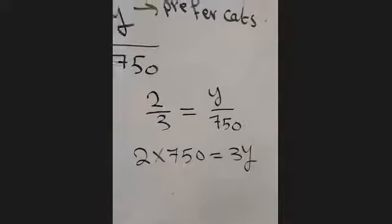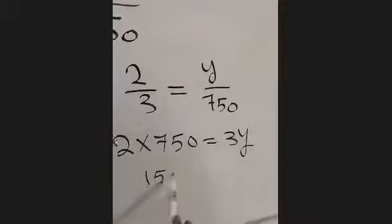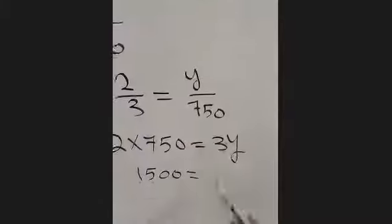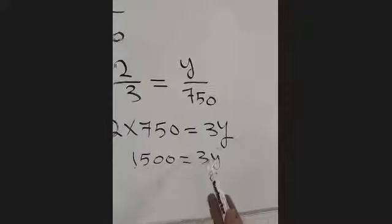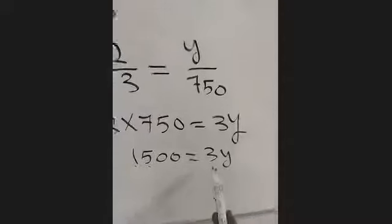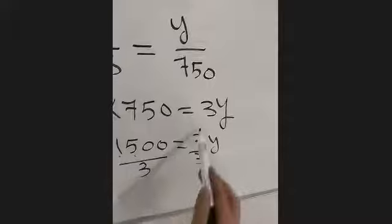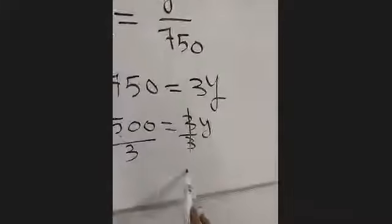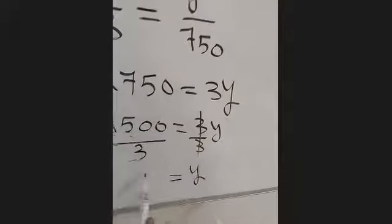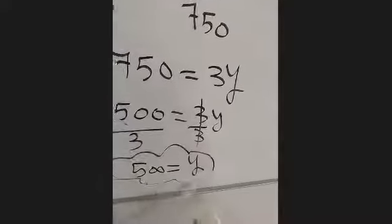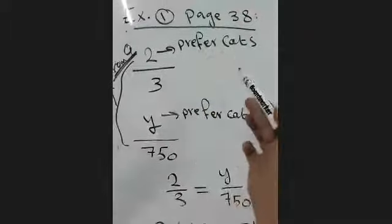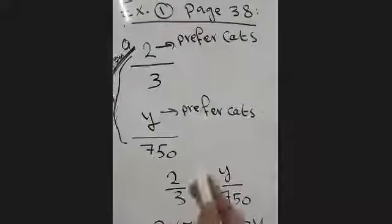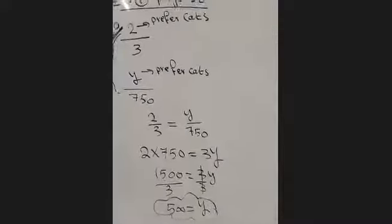2 multiply 750 is 1500, equals 3y. Now I need to find the value of y: divide both sides by 3 — cross the threes — leaving y equals 1500 divided by 3, which is 500. So y equals 500. That means if 2 out of 3 prefer cats, then 500 out of 750 should also prefer cats.